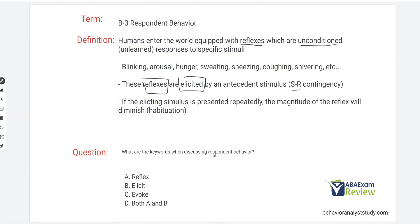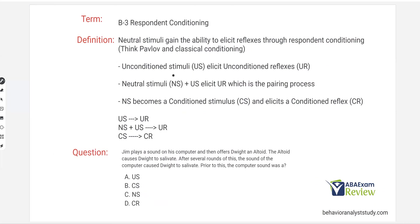What are the key words when discussing respondent behavior? Reflex — not response — because these are unconditioned reflexes. And elicit, not evoke. Reflexes are elicited by these antecedent stimuli. Evoke has to do with operant behavior. The key words are both reflex and elicited. When talking about respondent conditioning, you have to practice a few of these. Make your own diagrams and drawings. Neutral stimuli are gaining the ability to elicit reflexes through respondent conditioning — which is the same as Pavlovian or classical conditioning.